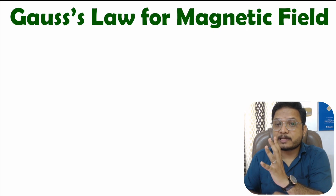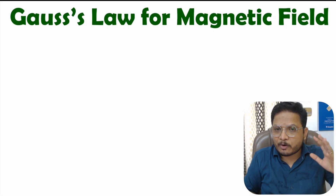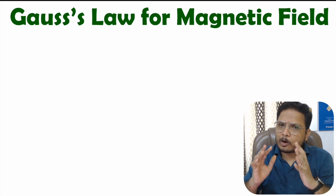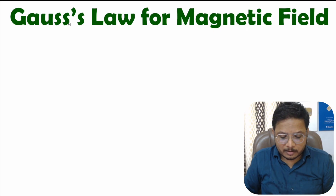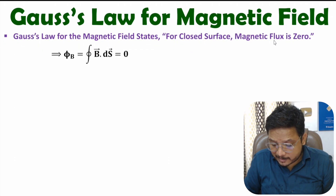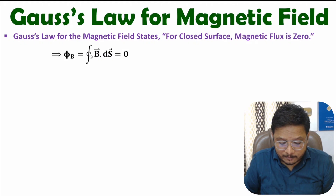So if you have magnetic flux passing through a closed surface, that will always be zero. The basic statement is: for a closed surface, magnetic flux is zero. One should know what magnetic flux is — magnetic flux is the surface integration of the magnetic field. For a closed surface, the magnetic flux passing through it is zero.